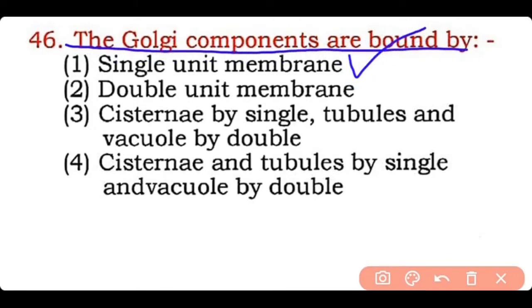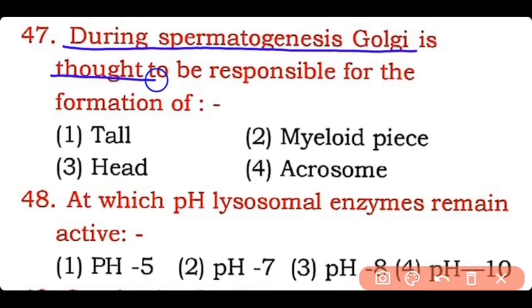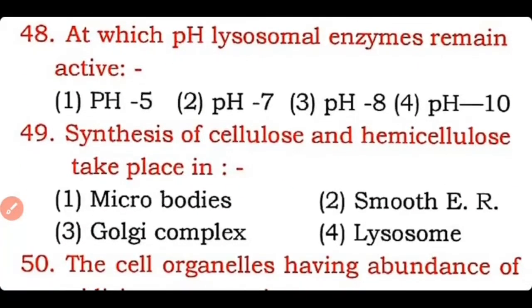Question 47: During spermatogenesis, the Golgi body is thought to be responsible for the formation of — tail, middle piece, head, or acrosome? Correct answer is option four — the acrosome is a bag of hydrolytic enzymes derived from the Golgi apparatus, present on the head of the sperm cell.